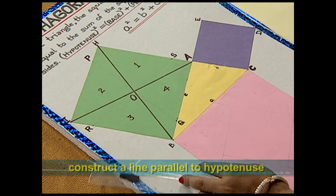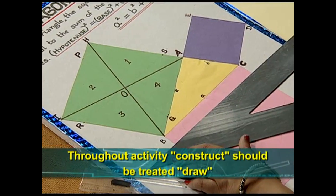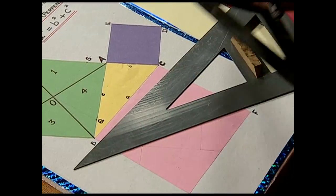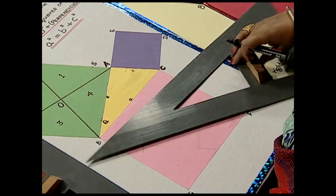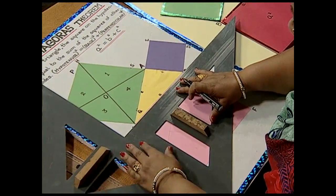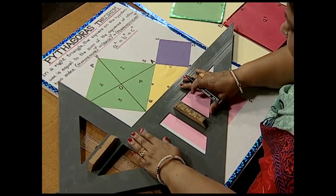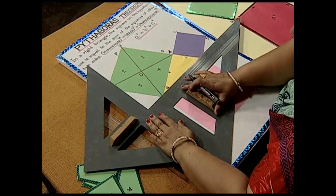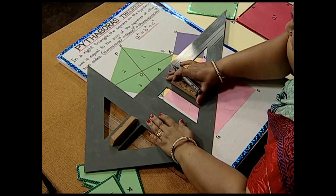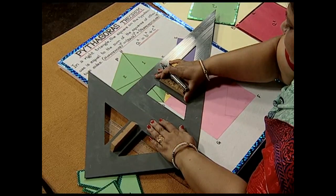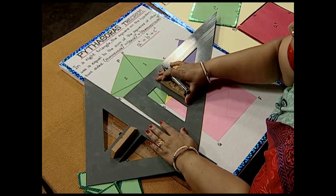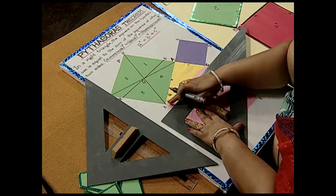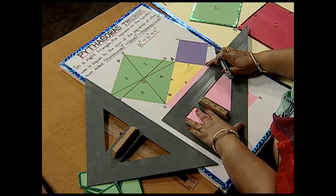Now with the help of set squares, we will construct a line parallel to hypotenuse. Here we will construct a line RS which is parallel to hypotenuse. This is a hypotenuse BC, and in order to draw a line parallel to it, we just slide the set square and this way we can construct a line passing through O. This is a line RS parallel to hypotenuse BC.